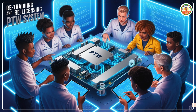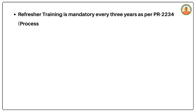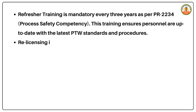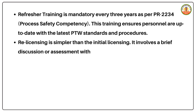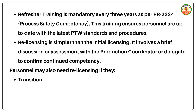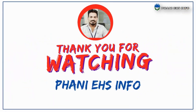Retraining and Relicensing — refresher training is mandatory every three years as per PR 20-34, Process Safety Competency. This training ensures personnel are up-to-date with the latest PTW standards and procedures. Re-licensing is simpler than the initial licensing; it involves a brief discussion or assessment with the production coordinator or delegate to confirm continued competency. Personnel may also need re-licensing if they transition to a new PTW role, such as moving from a permit holder to an area authority, or require additional training as determined by their line manager.